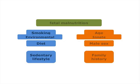Risk factors for chronic diseases are generally categorized into environmental and innate. Environmental factors include a sedentary lifestyle, diet, and smoking. Innate factors include family history, male sex, and age. And to these risk factors, we now have to add fetal malnutrition, which sits somewhere in between.